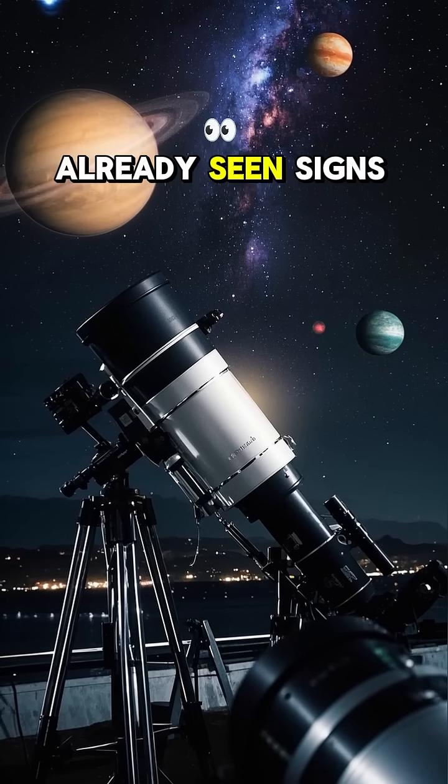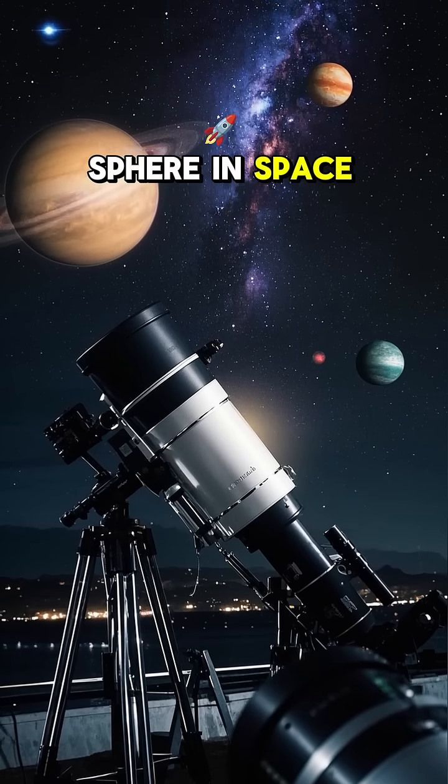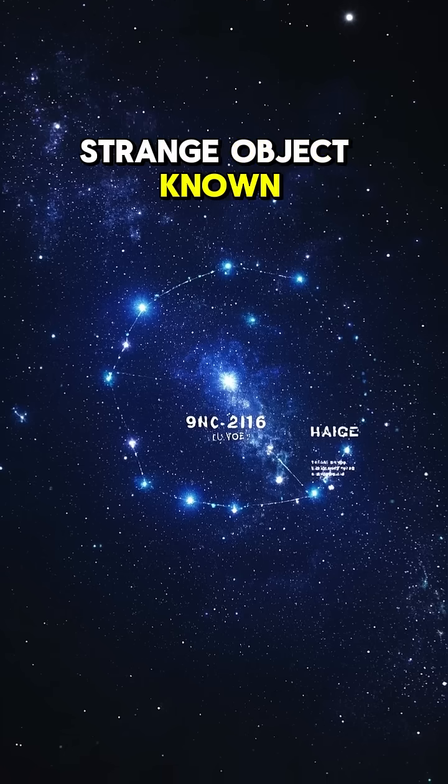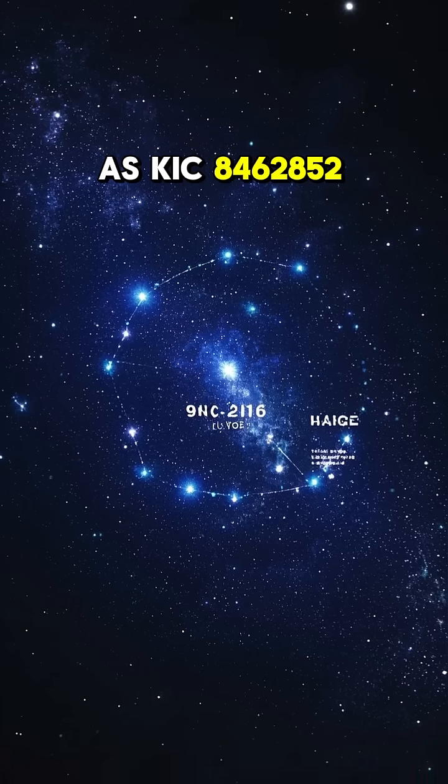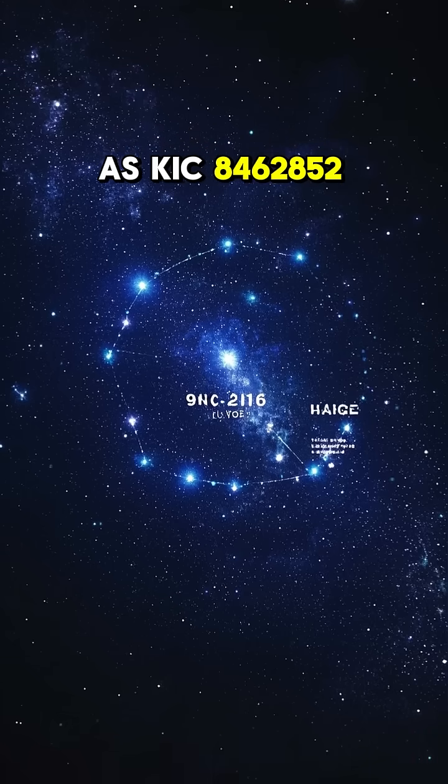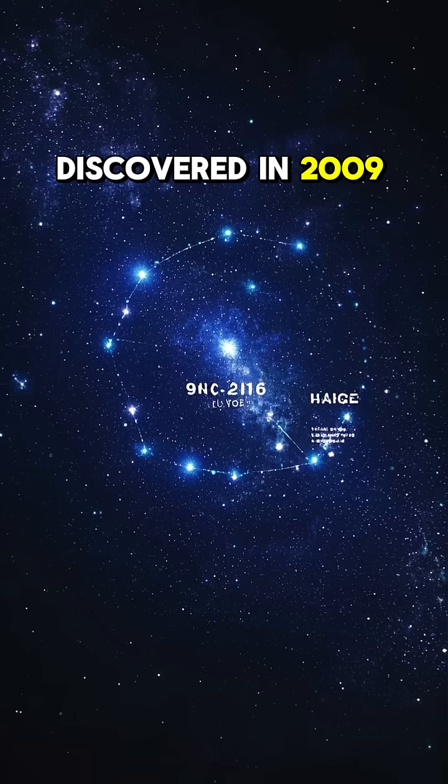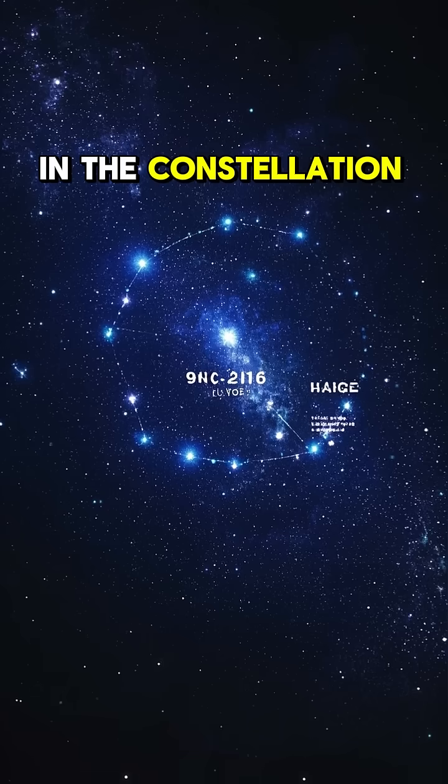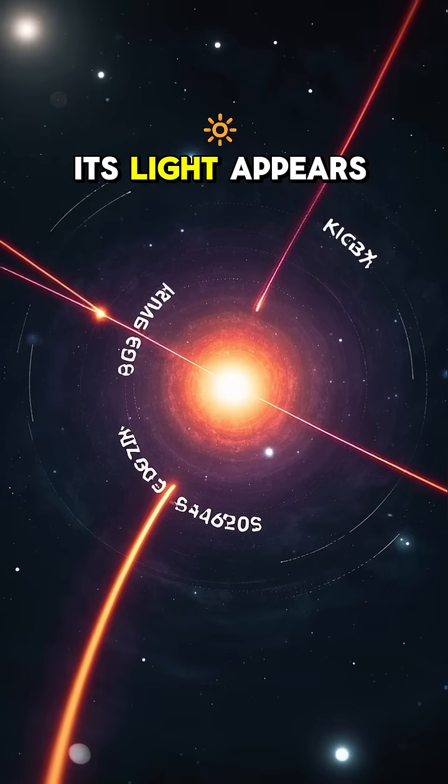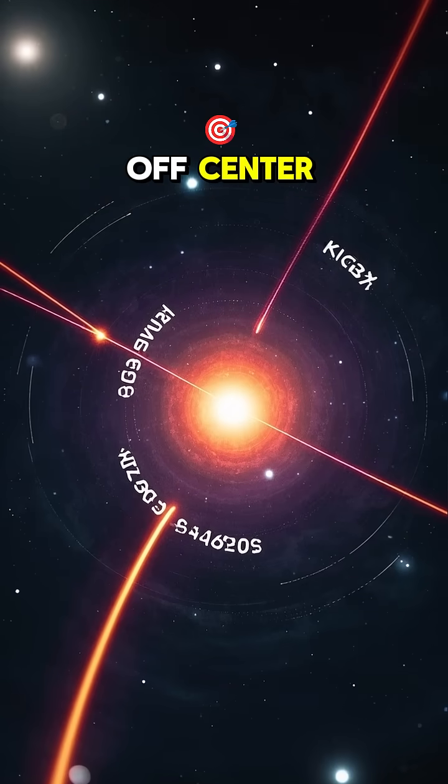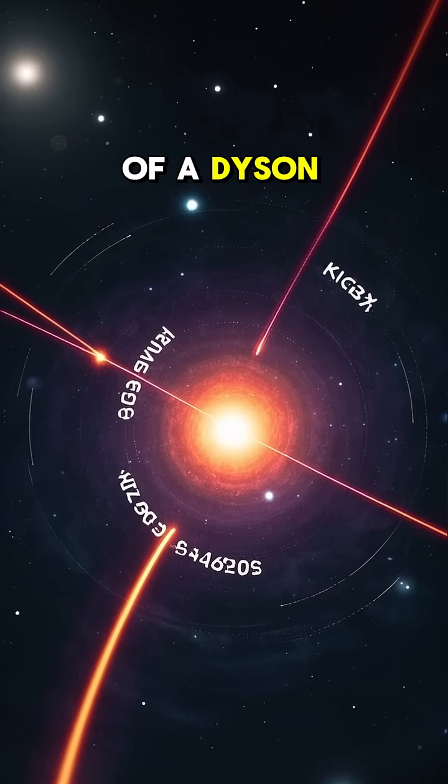Some people believe that we have already seen signs of a Dyson sphere in space, such as this strange object known as KIC 846-2852. It was first discovered in 2009 and is located in the constellation of Cygnus. Its light appears to be slightly off-center, which some believe could be evidence of a Dyson sphere.